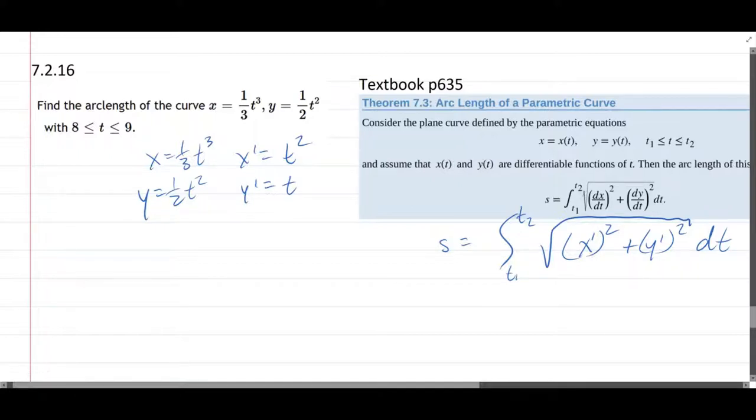And we're going from 8 to 9 in the t values. So our integral goes from 8 to 9, square root x prime is t squared squared plus y prime is t squared dt.